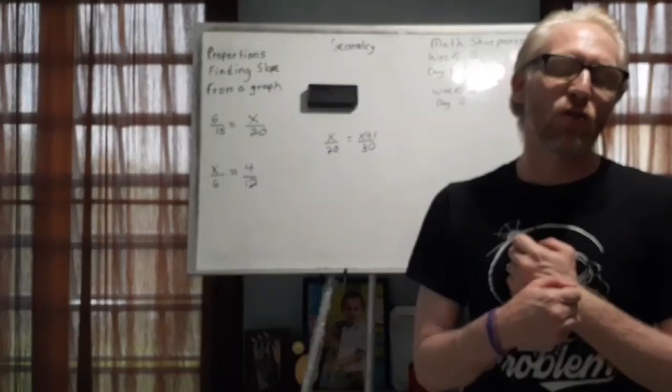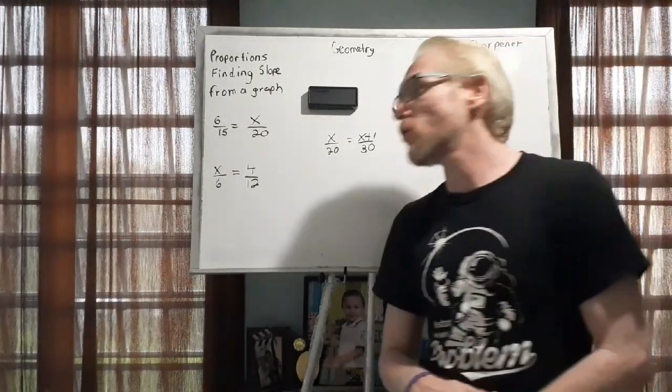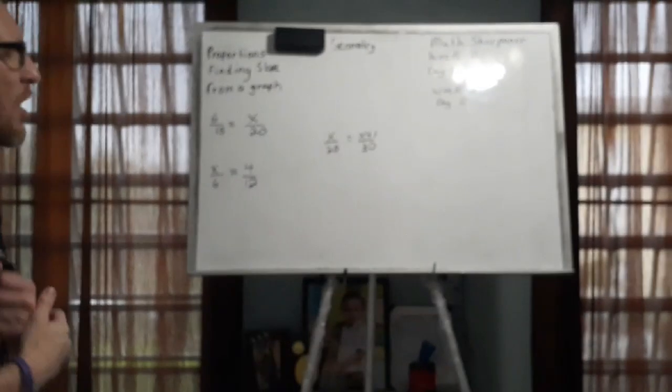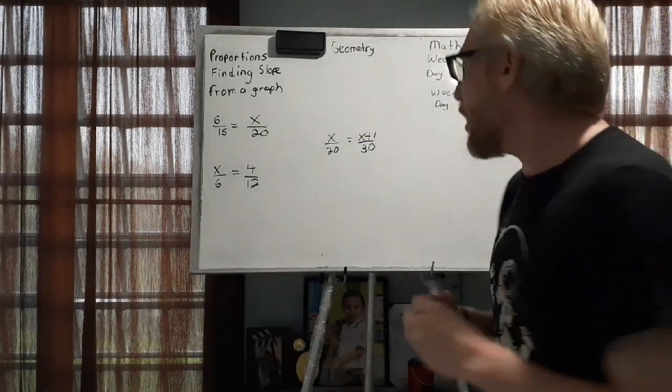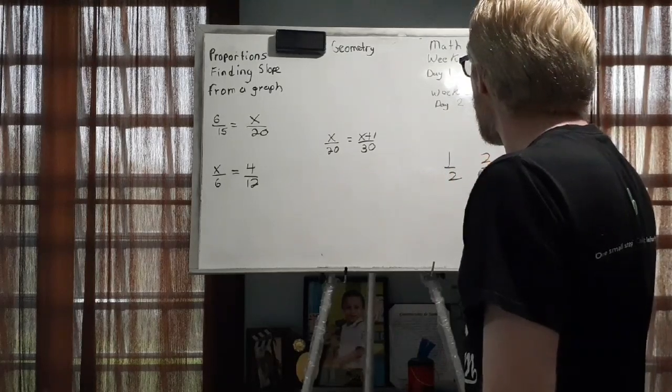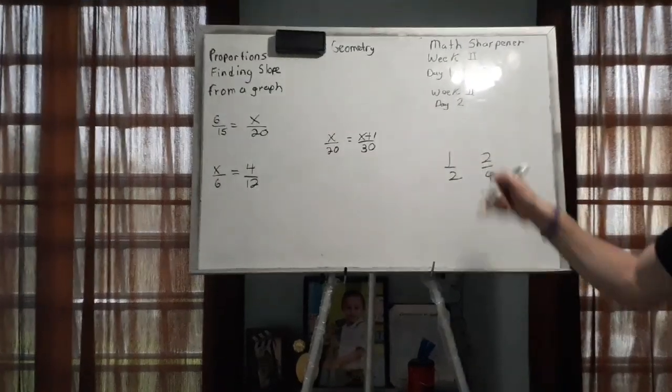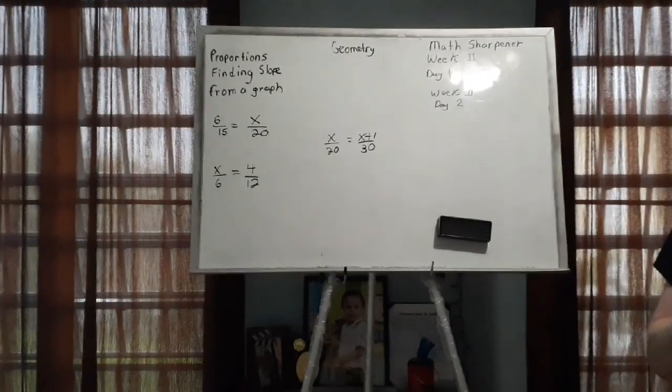Today we're going to cover proportions and finding a slope from a graph. For the slope portion, I want to explain how to identify whether it's positive, negative, and so on. Proportions are a combination of fractions and equations. A proportion is an equivalent fraction — for example, one half is equivalent to two-fourths. Some proportions are easy to solve mentally; others you're going to use cross multiplication, which is the method we're going to see in these next three examples.